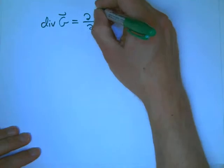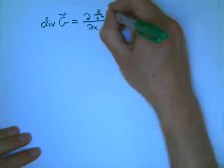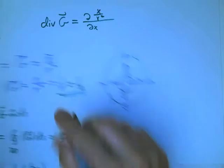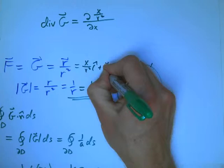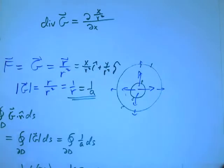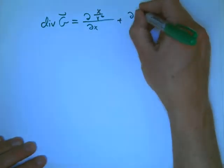And so, that's going to be d by dx of, remember it's x over r squared is one component. Let me write that down. It's x over r² i plus y over r² j. That's what our, a little more explicitly what our vector field is.